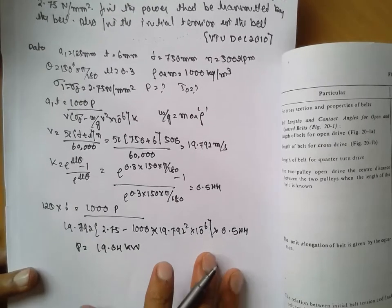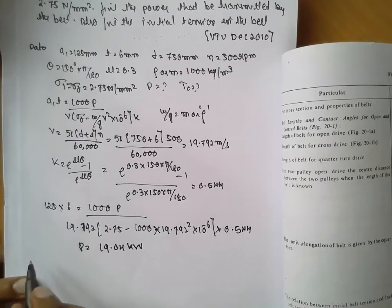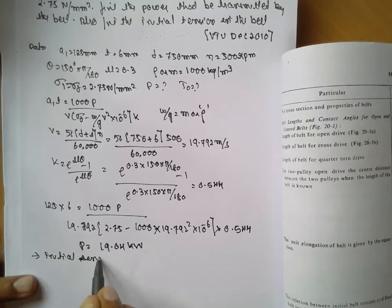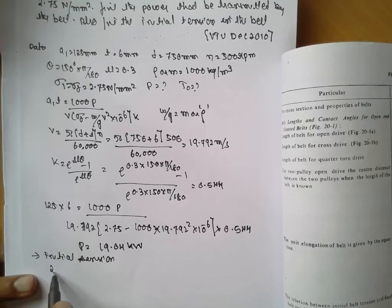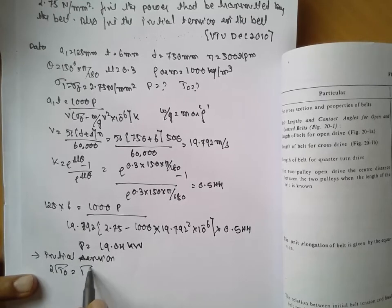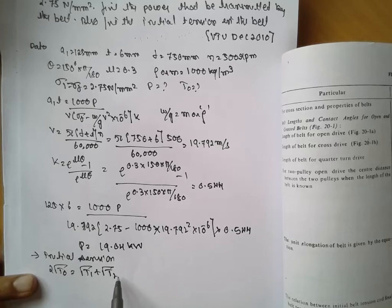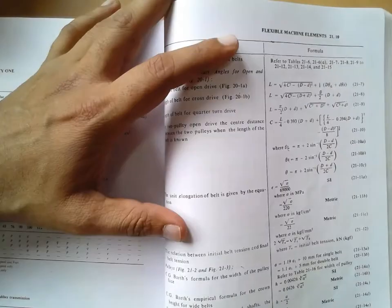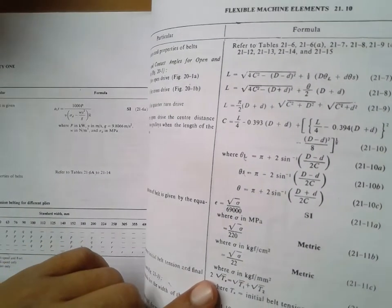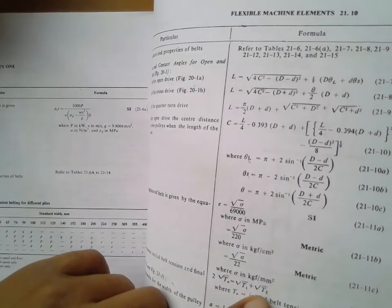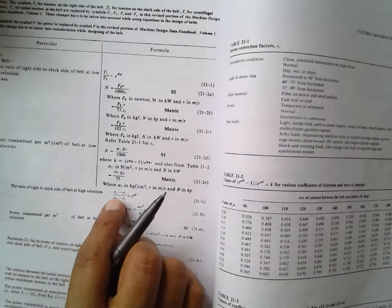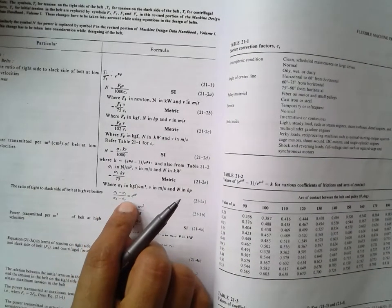Now we have to find out the initial tension. The initial tension formula is: 2 × sqrt(T0) = T1 + T2. This is the initial tension formula as given in the data handbook. We have to find out T1 and T2 using the formula: (sigma1 − sigma_c) / (sigma2 − sigma_c) = e^(mu × theta).